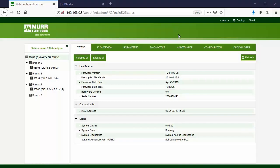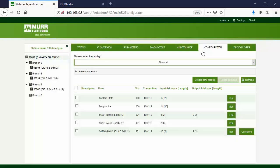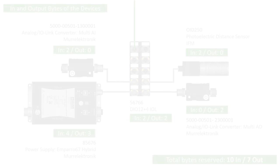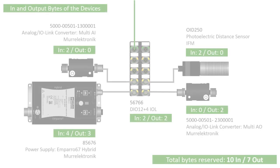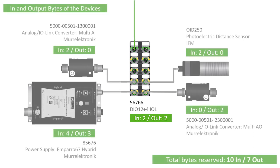Log in to the Cube67 web server. Go to the Configurator tab. The current Cube67 system configuration is shown, but we need to modify it. The IO-Link master, article number 56766, has two input bytes and two output bytes by default.